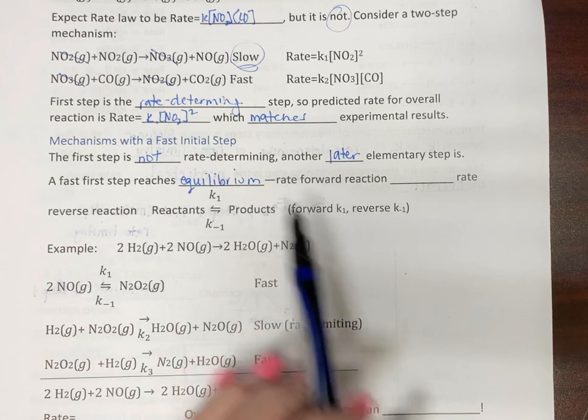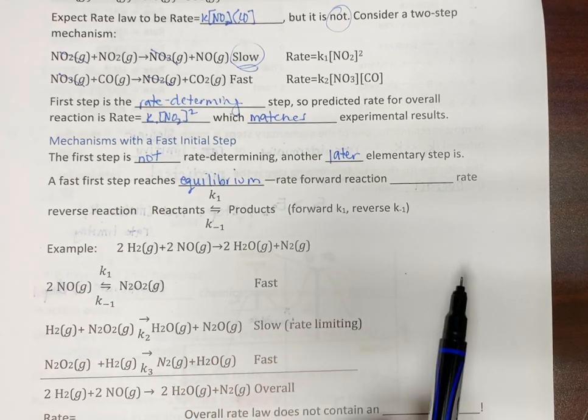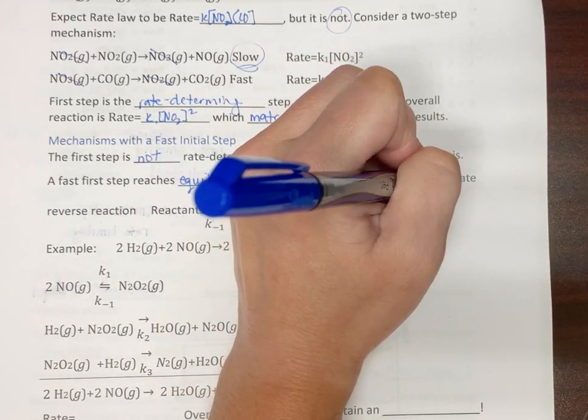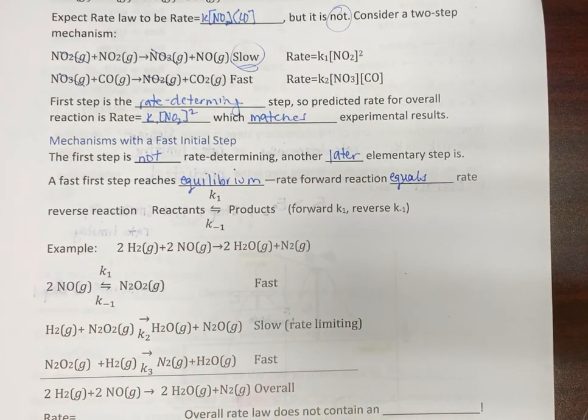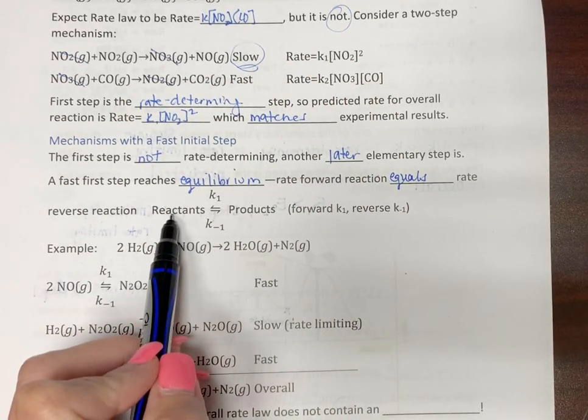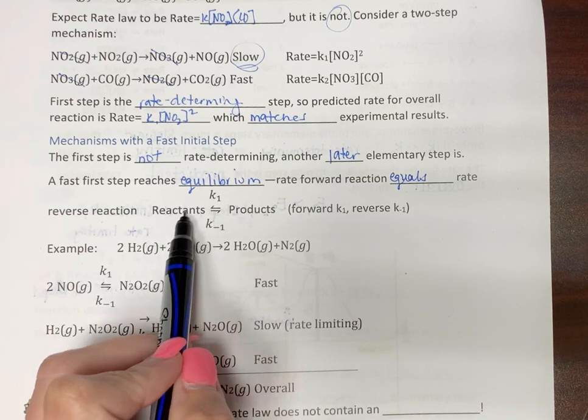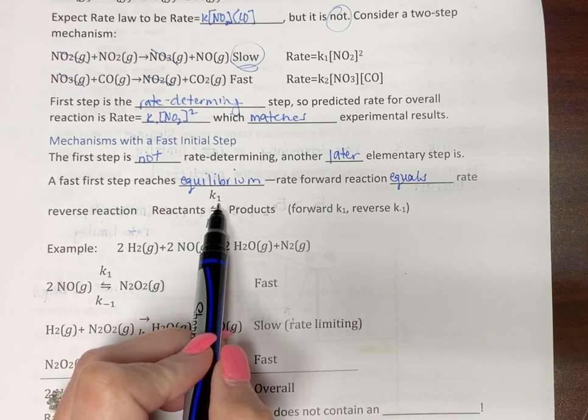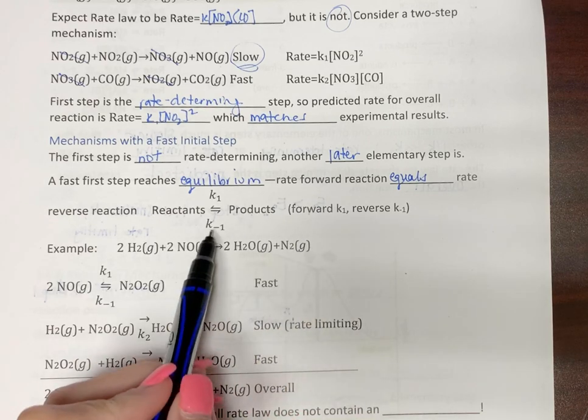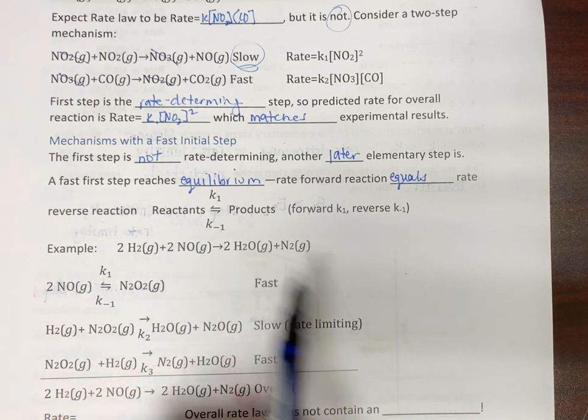So equilibrium is where the rate of our forward reaction equals the rate of our reverse reaction. So we have reaction going forward and backwards. So when it goes forward, we have K1. When it goes backwards, we have inverse K1.